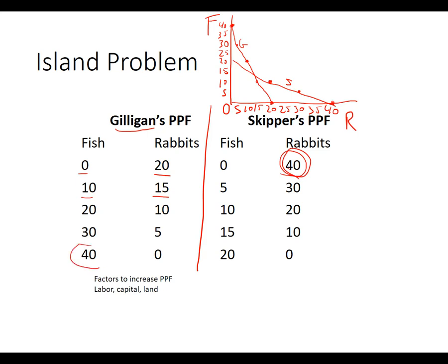Now think about factors of production and what will happen in the future. Skipper is going to get more human capital — he'll get better at catching rabbits, maybe think about a better rabbit trap or breeding rabbits. Gilligan can find the best fishing spots, get a better boat or net, and become more skilled. We'd get more of both, but only because they specialized in their individual strengths.